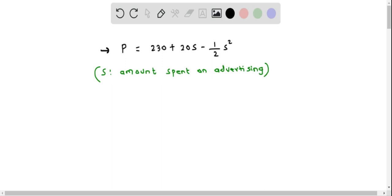So here, we are going to use a calculus method to find the amount which gives the maximum profit. For that, we need to set up this equation: the derivative of P with respect to S equals 0.